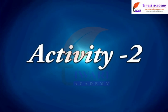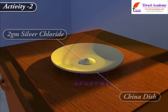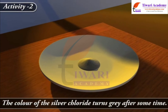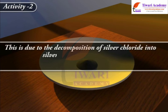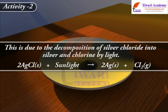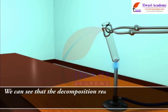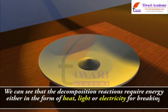Let us do another activity. Take about 2 grams of silver chloride in a china dish and place it in sunlight for some time. The colour of the silver chloride turns grey due to decomposition of silver chloride into silver and chlorine by light: 2AgCl(s) + sunlight gives 2Ag(s) + Cl2(g). Decomposition reactions require energy in the form of heat, light, or electricity to break down the reactants.